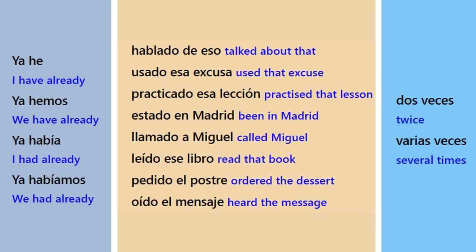YA HABÍA USADO ESA EXCUSA DOS VECES — 'I had already used that excuse twice.' The problem is, I've already used that excuse twice. And YA HABÍA LLAMADO A MIGUEL VARIAS VECES — 'I had already called Miguel several times.'